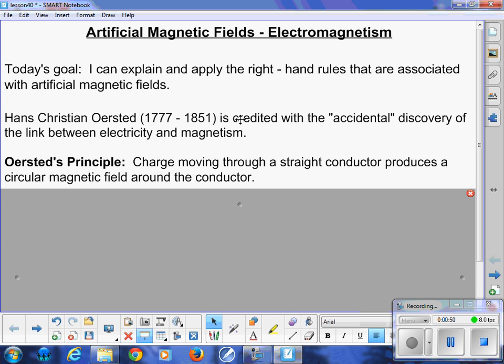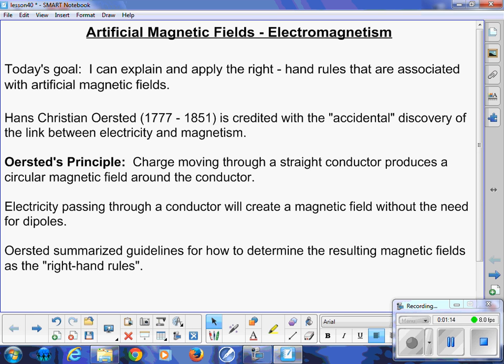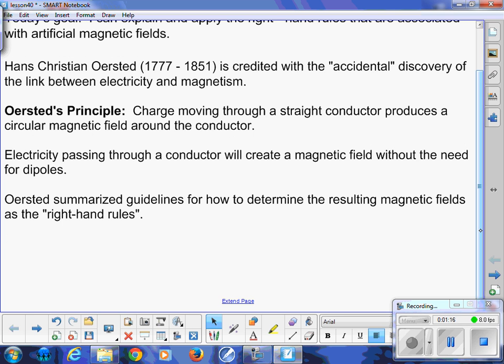The history lesson: Hans Christian Orsted from 1777 to 1851, he is the one that accidentally discovered the link between electricity and magnetism. Orsted's principle: charge moving through a straight conductor produces a circular magnetic field around the conductor. He then went on and found a couple of other situations. We're going to talk about motor principle, solenoids, and so on, but all of them are associated with that right-hand rule.